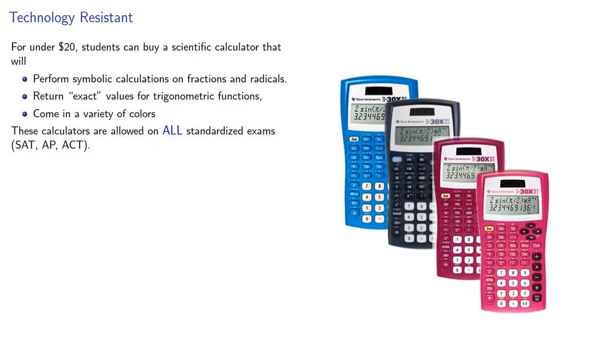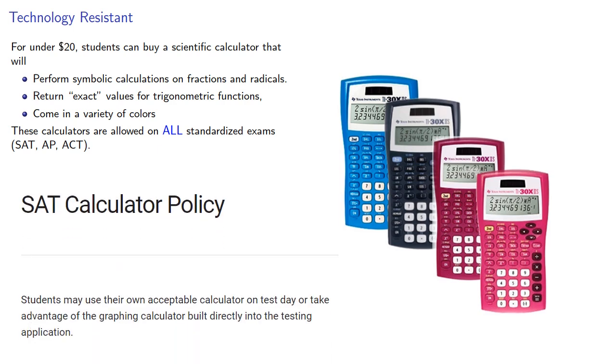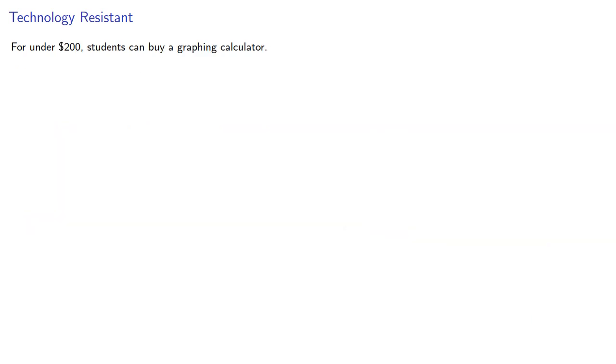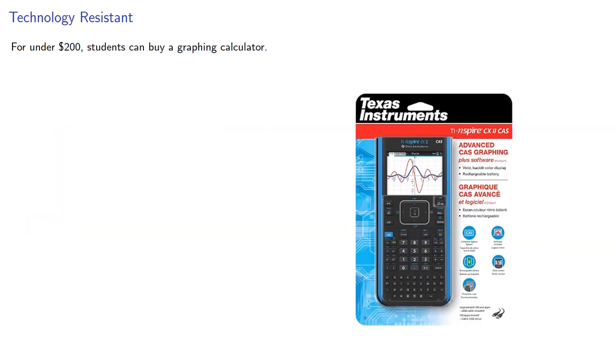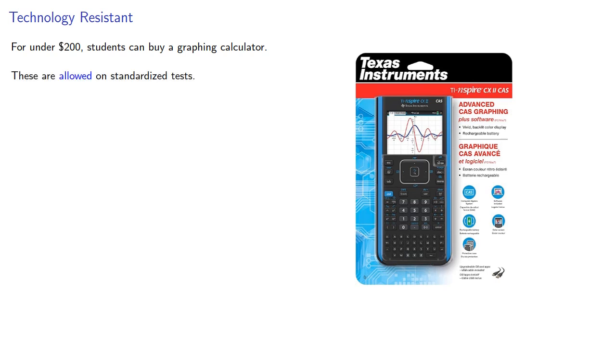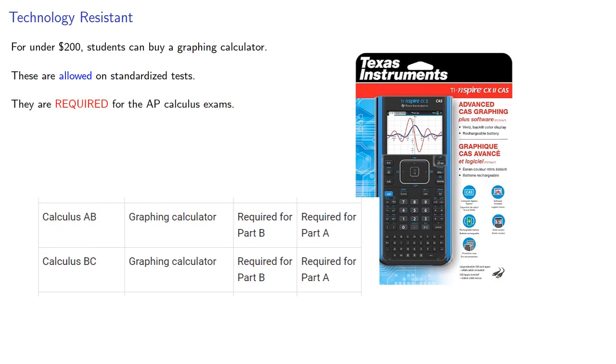These calculators are allowed on all standardized exams like the SAT, the AP exam, the ACT, and so on. For under $200, students can buy a graphing calculator. These are also allowed on all standardized exams, and in fact they are required for the AP calculus exams.